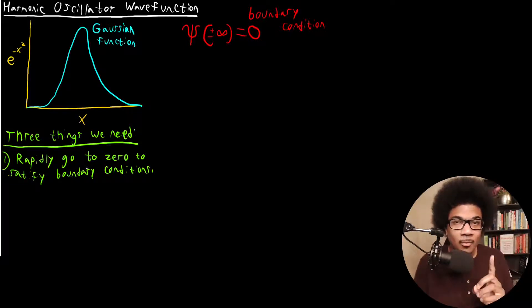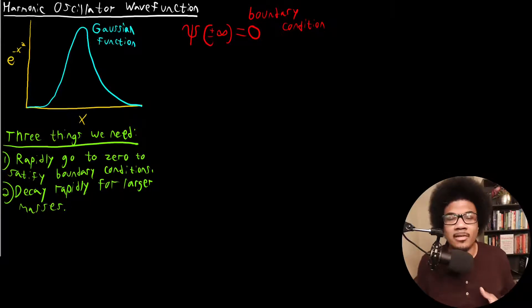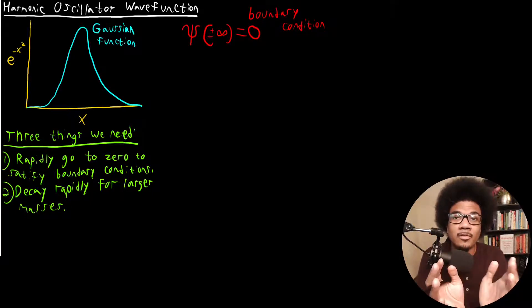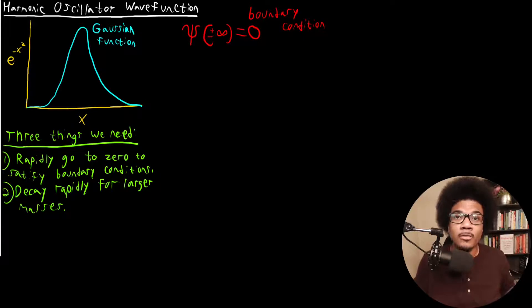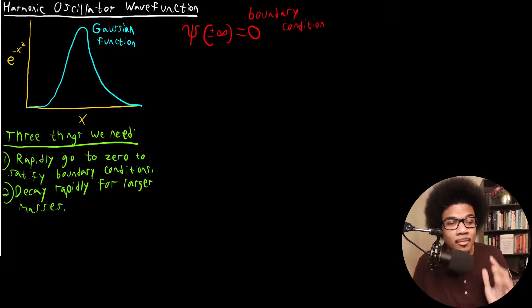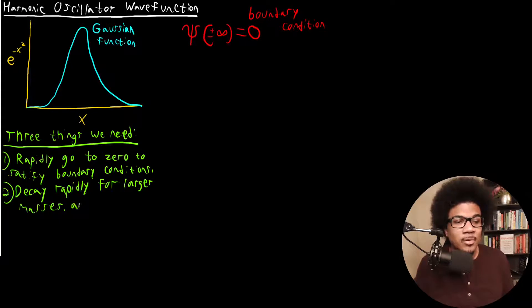We also needed to decay rapidly for larger masses. And why is that? Why do we need it to decay rapidly for larger masses? Well, the reason is, as we looked at in a previous video, as you start to have larger masses, larger spring constants, that's going to result in a narrower well. So it has to go to zero much quicker for larger spring constants, larger masses than it would for smaller masses and smaller spring constants. So we have to make sure that this decays rapidly for larger masses and spring constants.